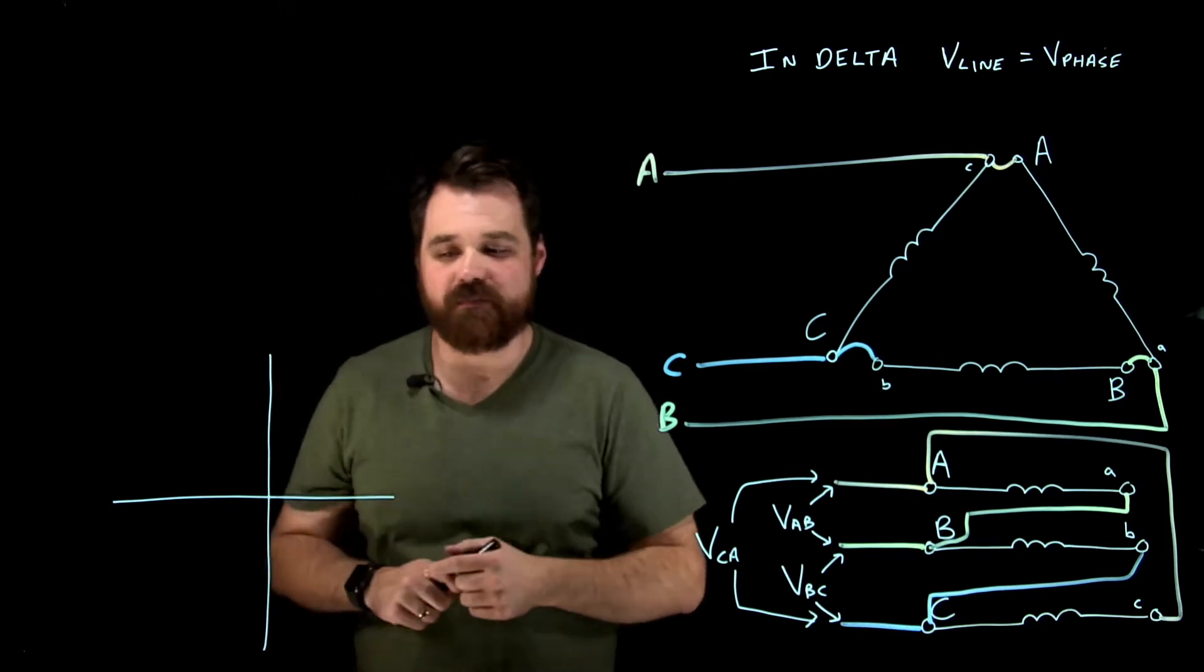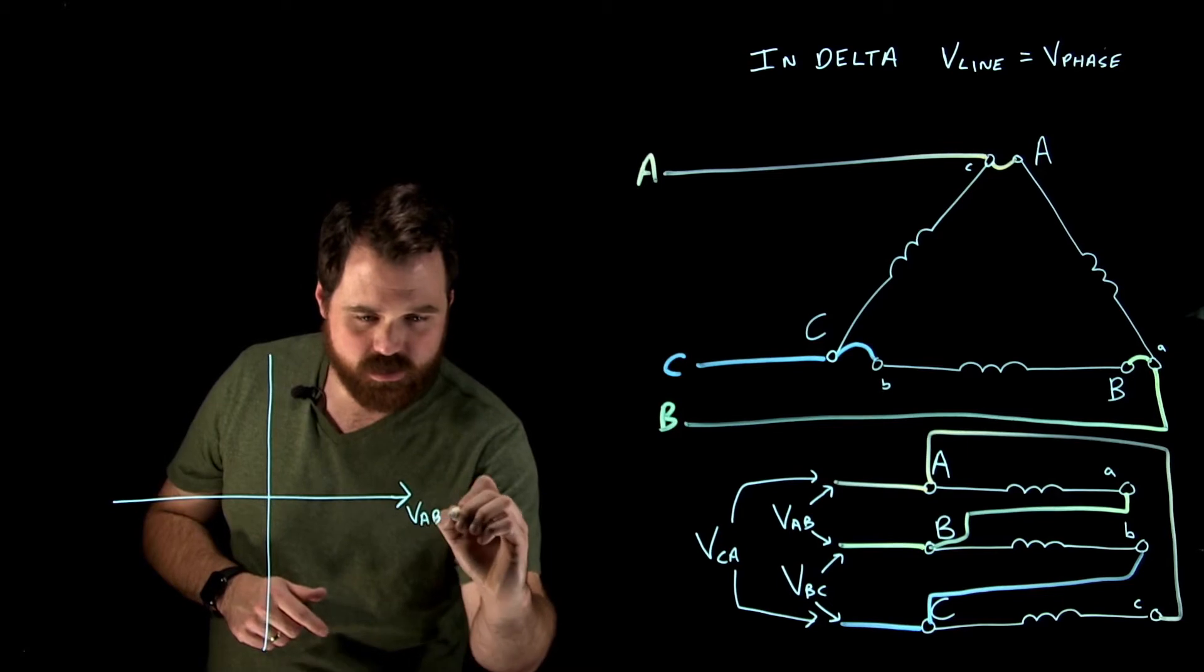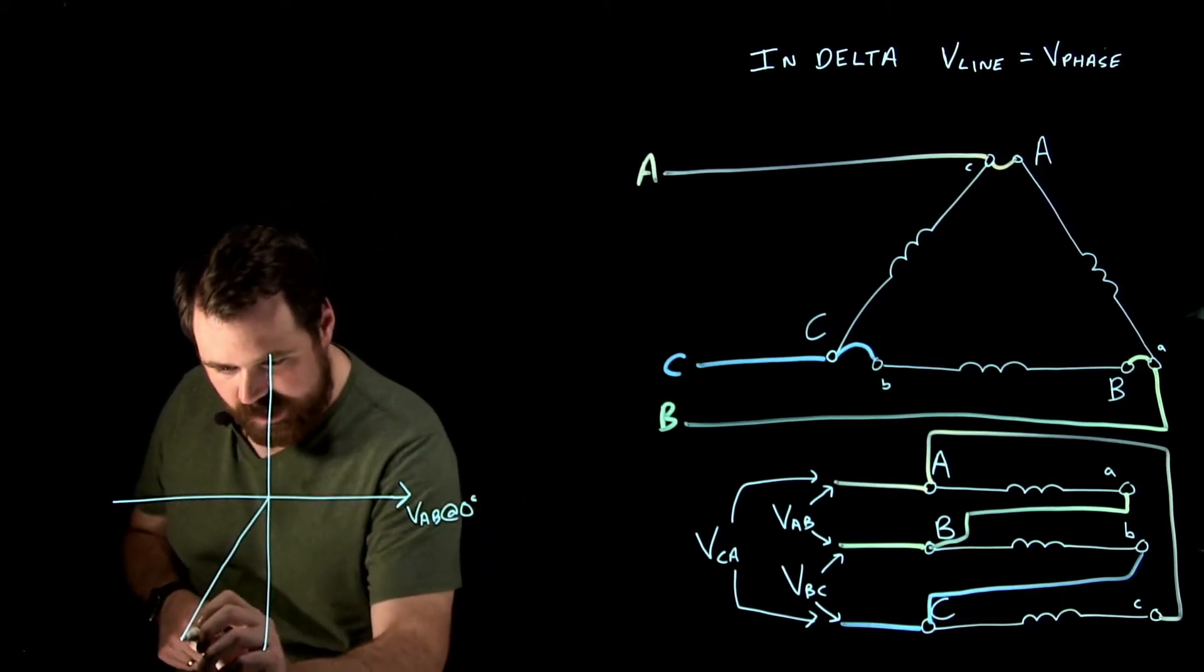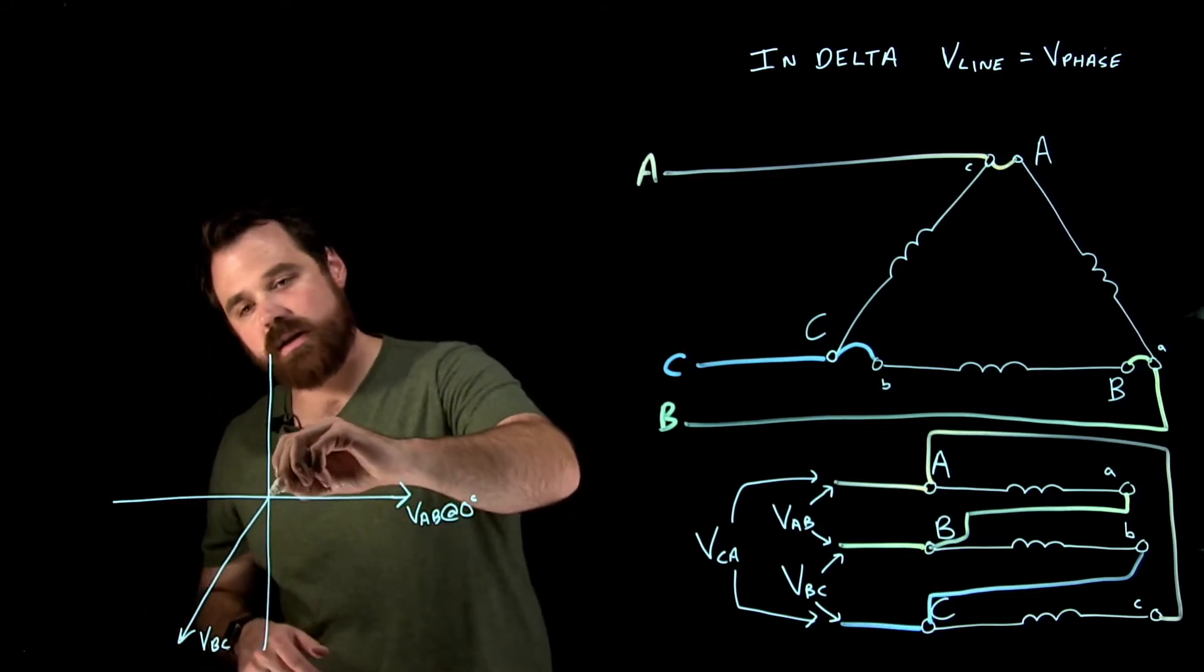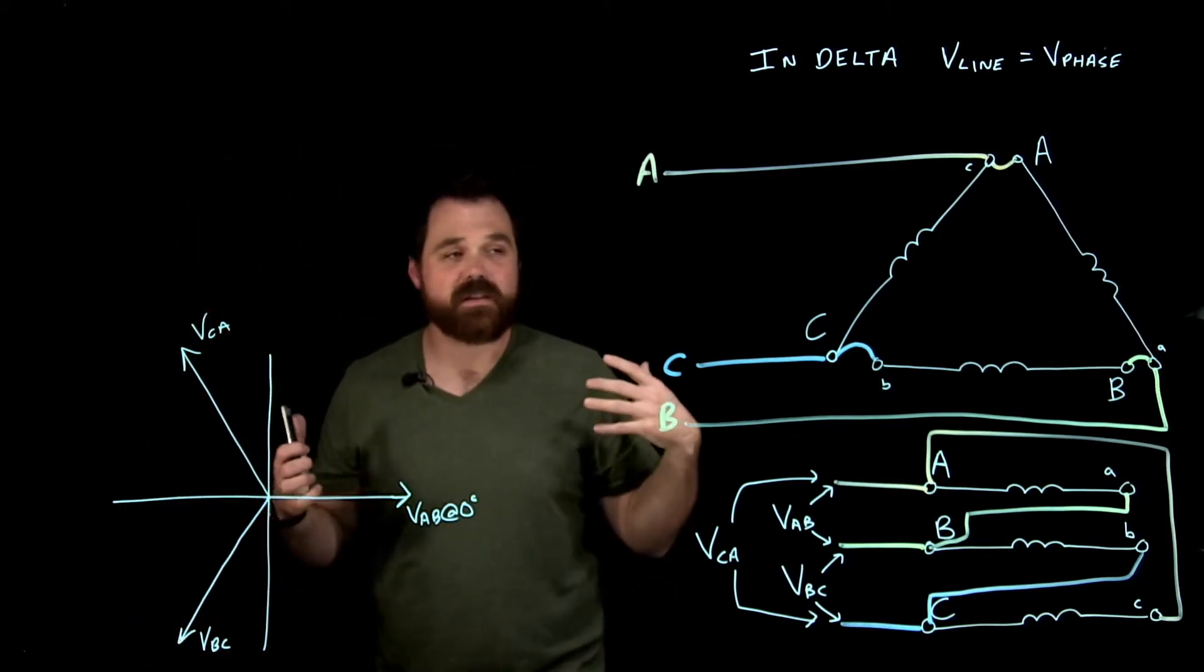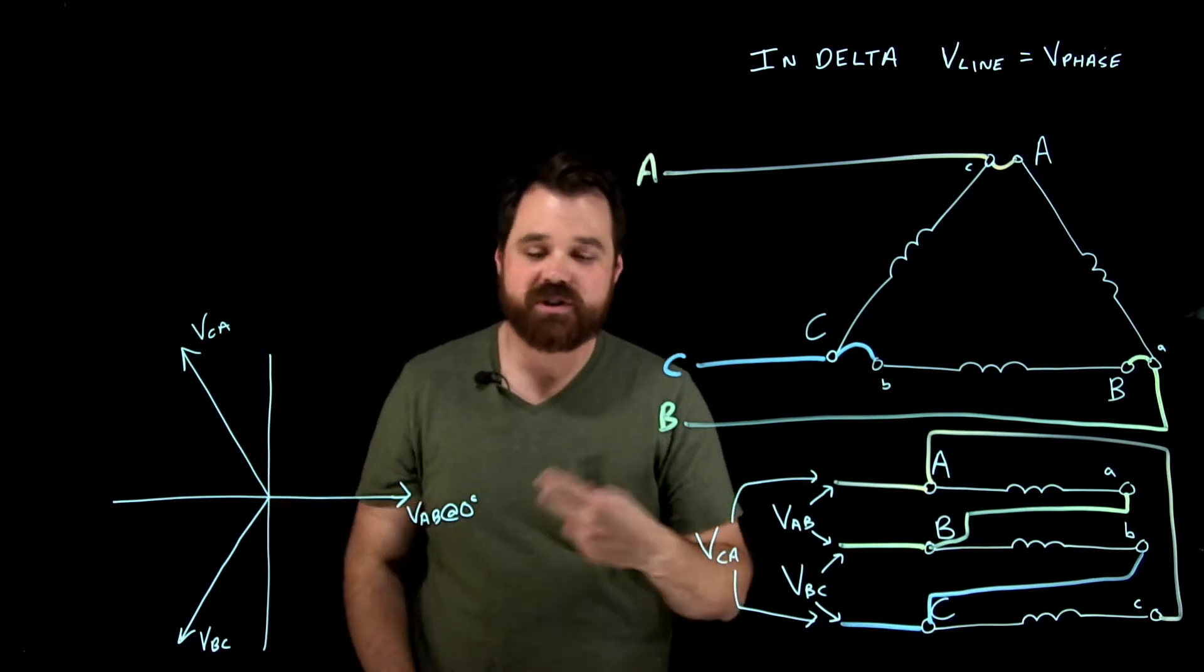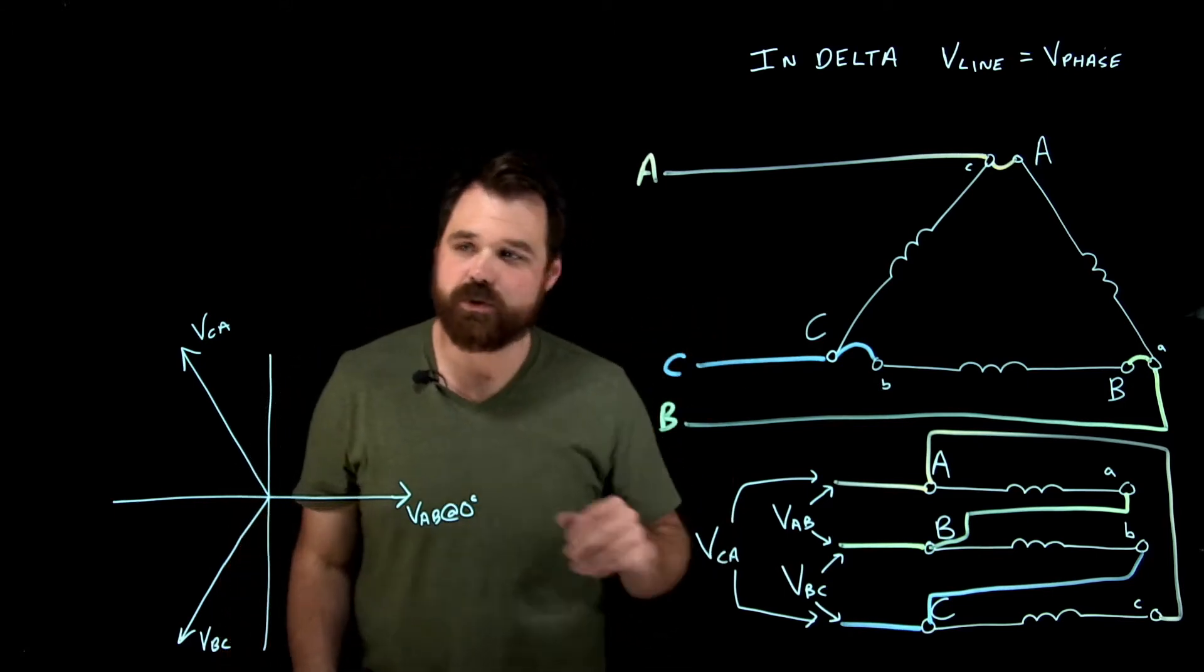So where that goes on to my phasor diagram is I'll have V A to B at zero degrees. 120 degrees lagging behind is V B to C. And then 120 degrees behind that is V C to A. So that's my three phasors that I get from this. If I was to hook it up to an oscilloscope or to a phasor diagram meter.